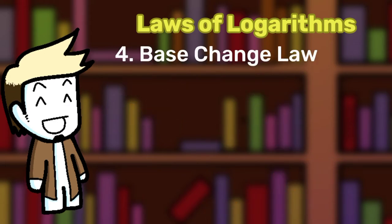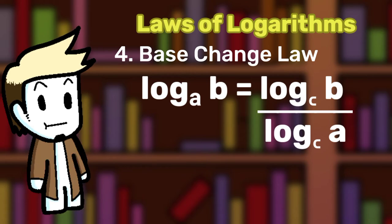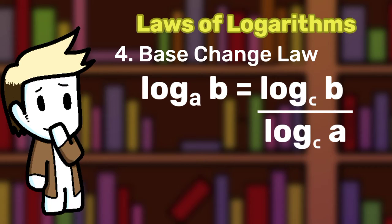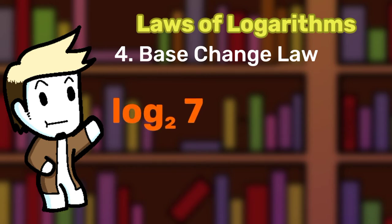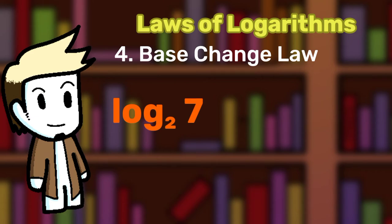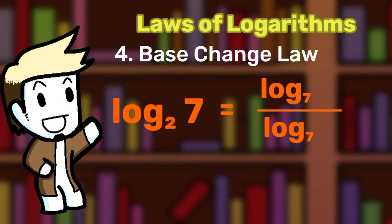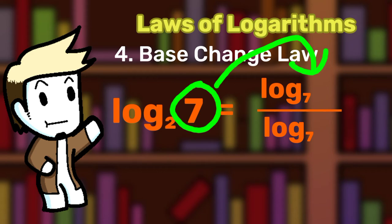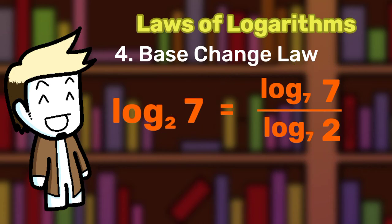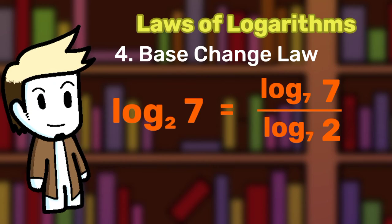The final one: the law of base change. Log base A of B equals log base C of B over log base C of A. I assure you, even though this looks complex, it isn't that complicated. Let me explain with an easy example: log base 2 of 7. To change the base of a log, first you must know what base you're going to change it into. Let's change base 2 into base 7. Write a fraction where both the numerator and denominator have the log with the new base. Move the number into the numerator, and move the old base into the denominator. And we are done — we have successfully changed the base. Now let me just simplify this expression.